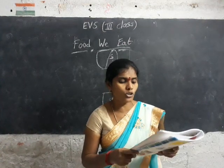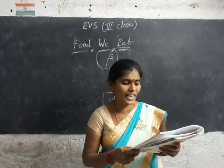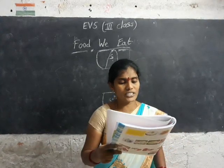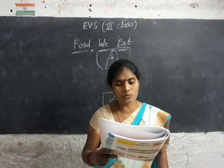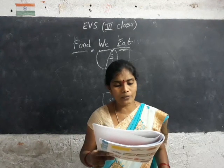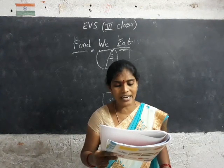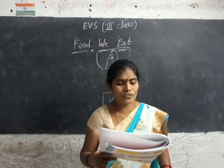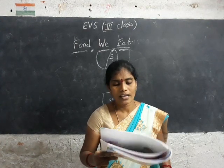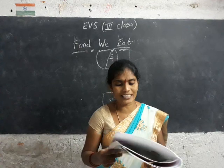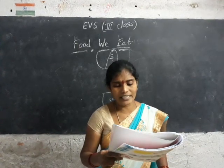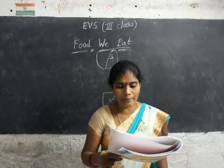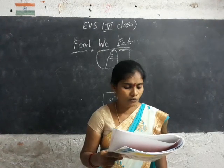Non-vegetarians eat all types of food products available from both plants and animals. Vegetarians eat food products that come mainly from plants — they also eat animal products such as milk and honey, but they don't eat meat and fish. Some vegetarians eat eggs. Vegetarian food is healthier.